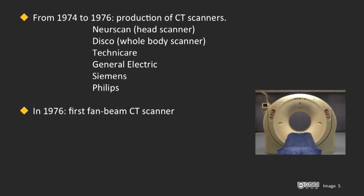In 1976, the first fan beam scanner was developed. The fan-shaped radiation beam covered a larger part of the patient's body. The gantry — this part of the body highlighted by an arrow — would spin 360 degrees in one direction and take an image, then spin 360 degrees back in the other direction to take a second image. However, between each image the gantry would stop, reverse direction, and the patient table would be moved forward. As a result, scanning time was very long.